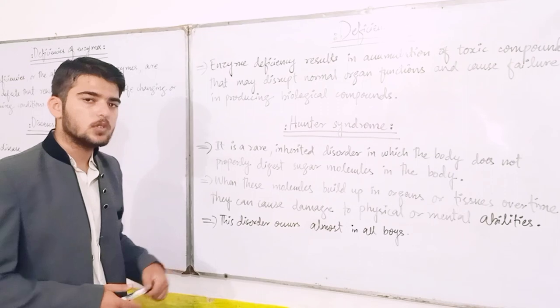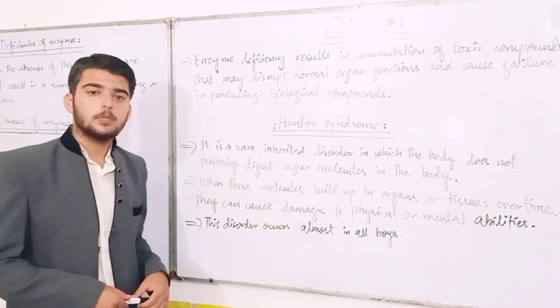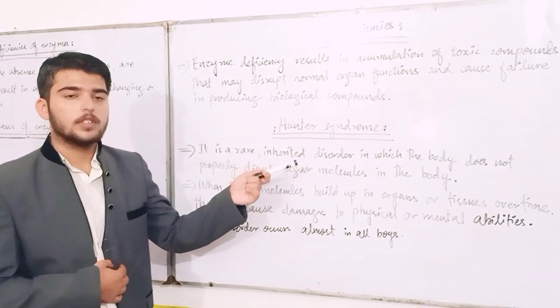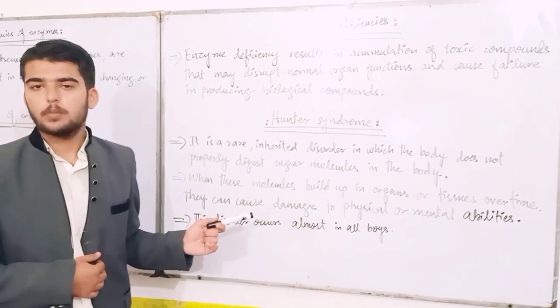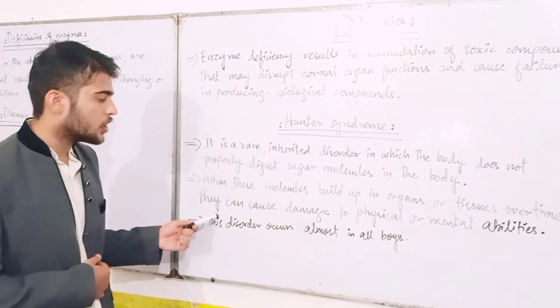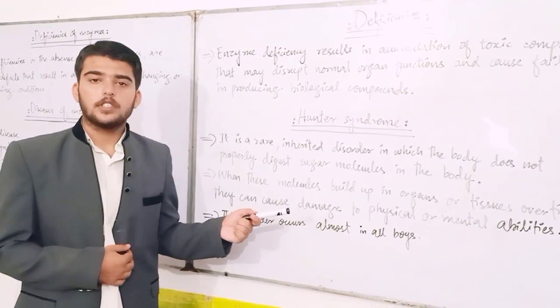For example, Hunter syndrome. Hunter syndrome is a rare inherited disorder in which the body does not properly digest sugar molecules. When these molecules build up in organs and tissues over time,